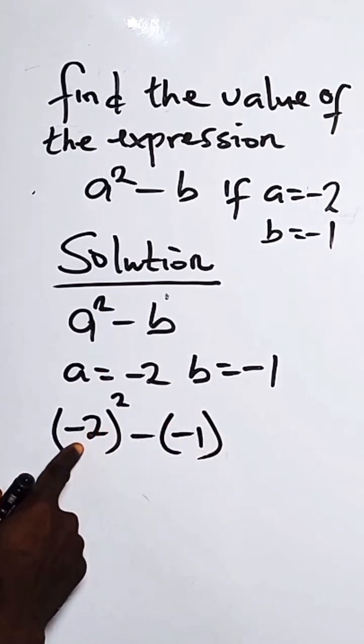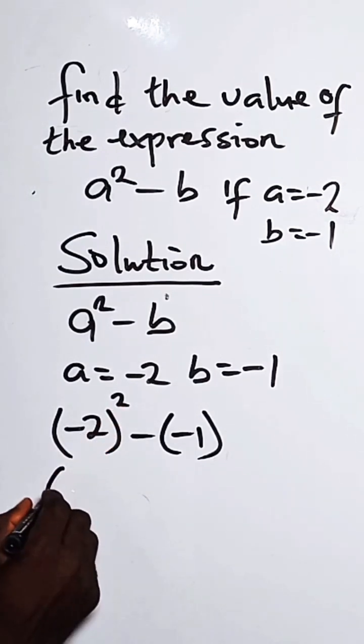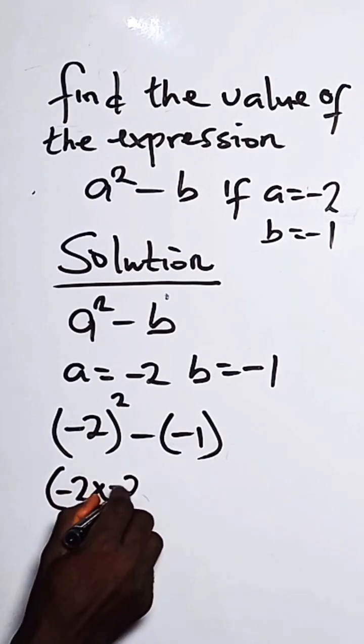Now for minus 2 squared in the bracket, the minus is affected, 2 is affected by the square. So we have minus 2 as minus 2 times minus 2.